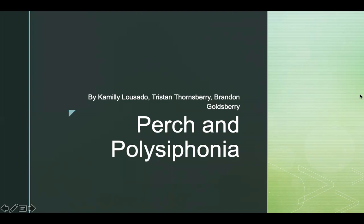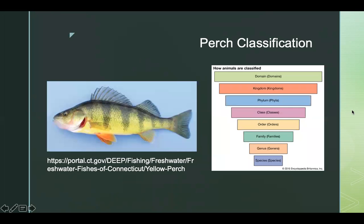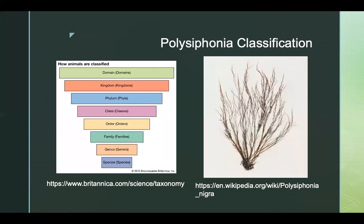Perch taxonomy: its domain is Eukarya, kingdom Animalia, phylum Chordata, class Teleosti, order Perciformes, family Percidae, genus Perca linnaeus, and species Perca flavescens. For Polysiphonia: domain Eukarya, kingdom Plantae.